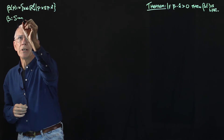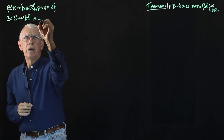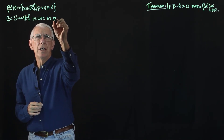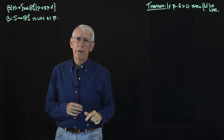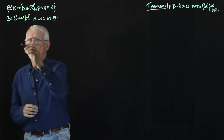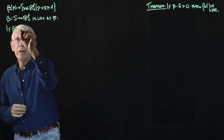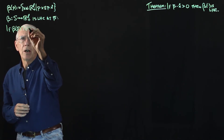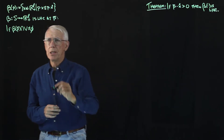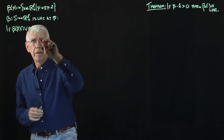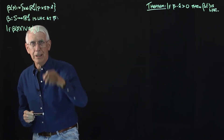The budget set correspondence goes from the unit simplex into RL plus. It is lower hemicontinuous at a particular price list P bar in the domain, meaning that if the budget set there intersects with some open set V in the target space — and that should be a V, not the universal quantifying symbol.